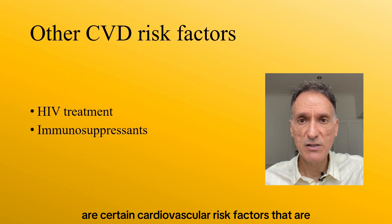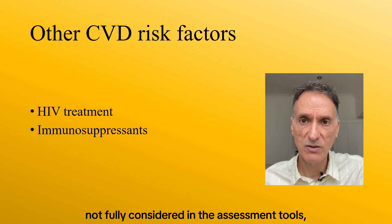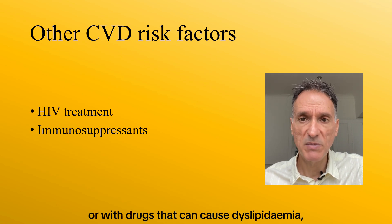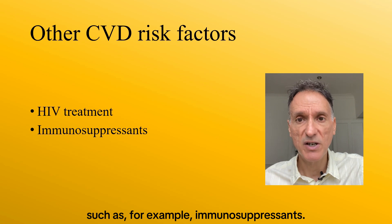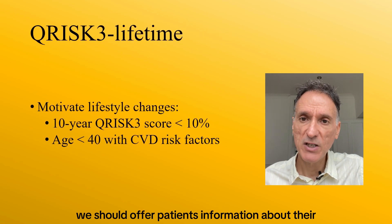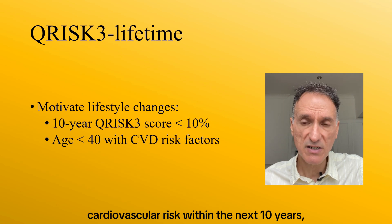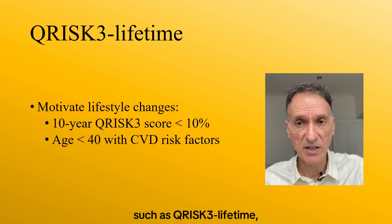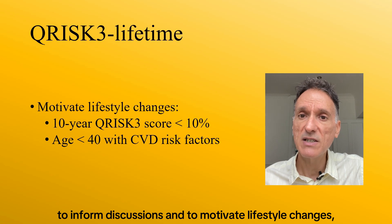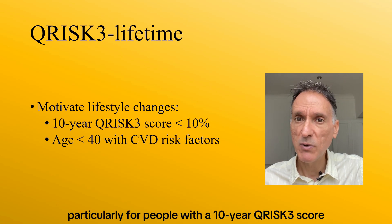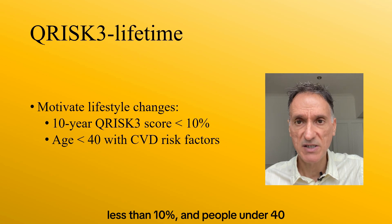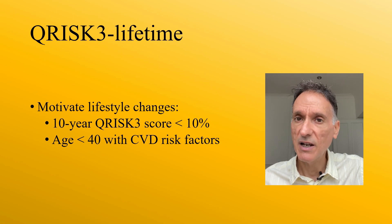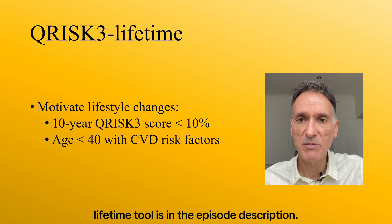In addition, there are certain cardiovascular risk factors not fully considered in the assessment tools, such as people treated for HIV or with drugs that can cause dyslipidaemia, for example immunosuppressants. Although we should offer patients information about their cardiovascular risk within the next 10 years, we should also consider using a lifetime risk tool such as QRISK-3 Lifetime to inform discussions and motivate lifestyle changes, particularly for people with a 10-year QRISK-3 score less than 10% and people under 40 who have cardiovascular disease risk factors. The link to the QRISK-3 Lifetime tool is in the episode description.